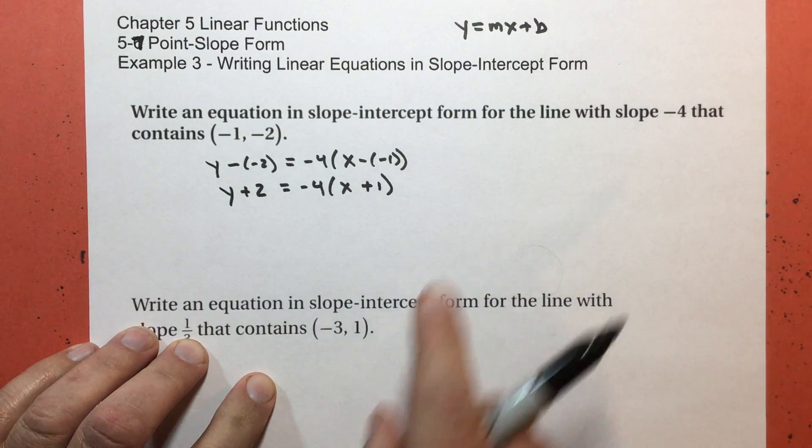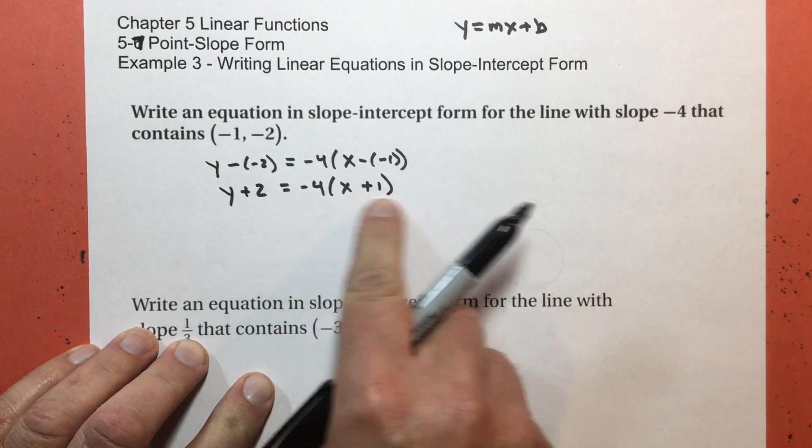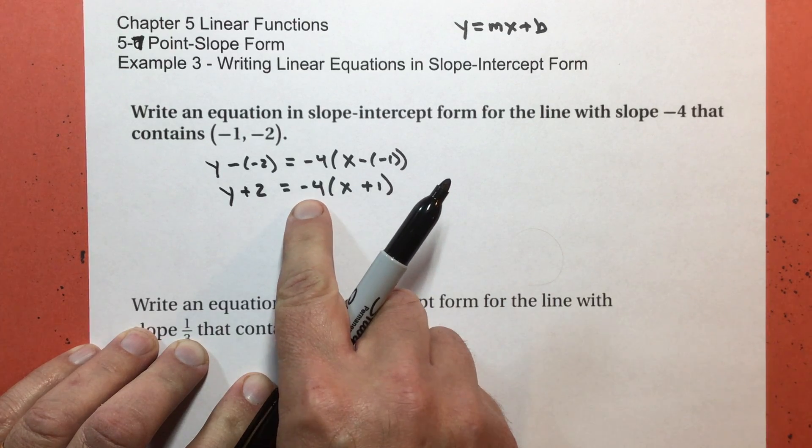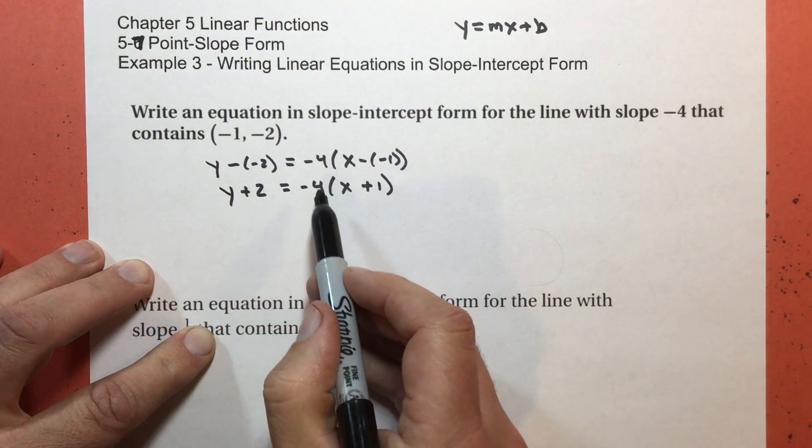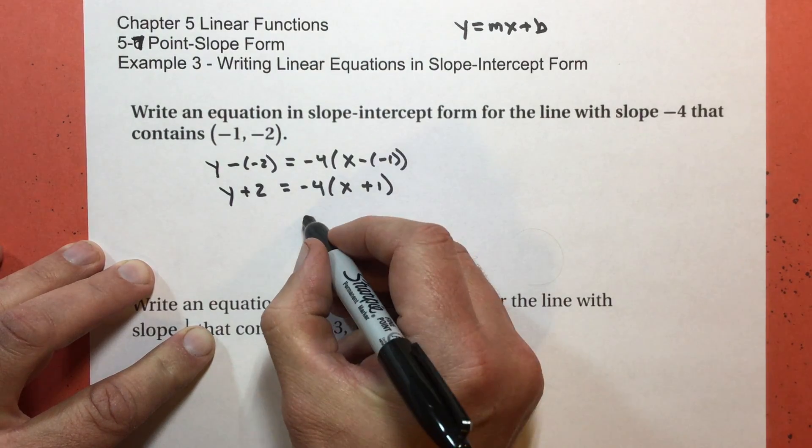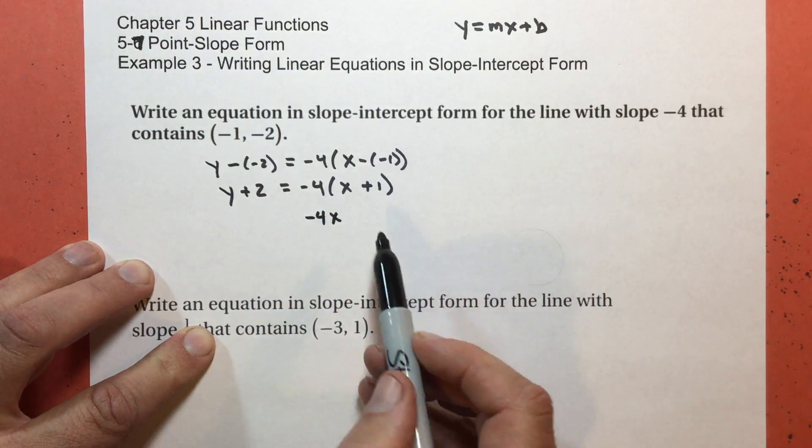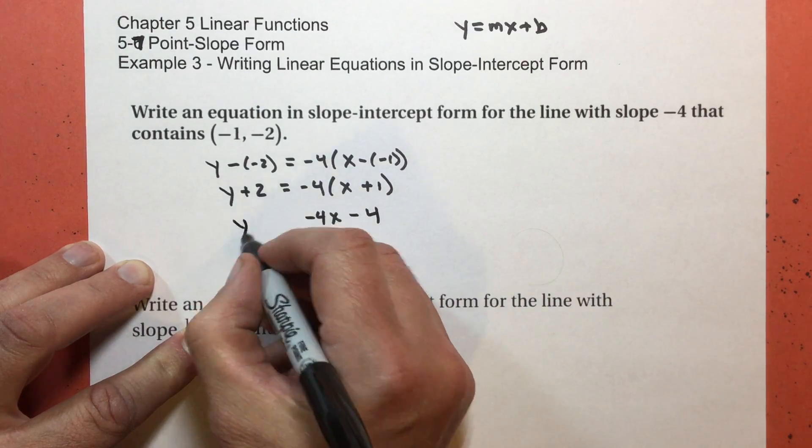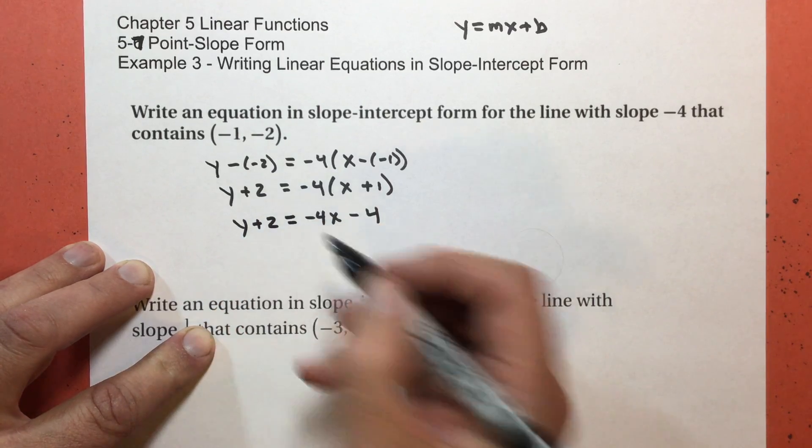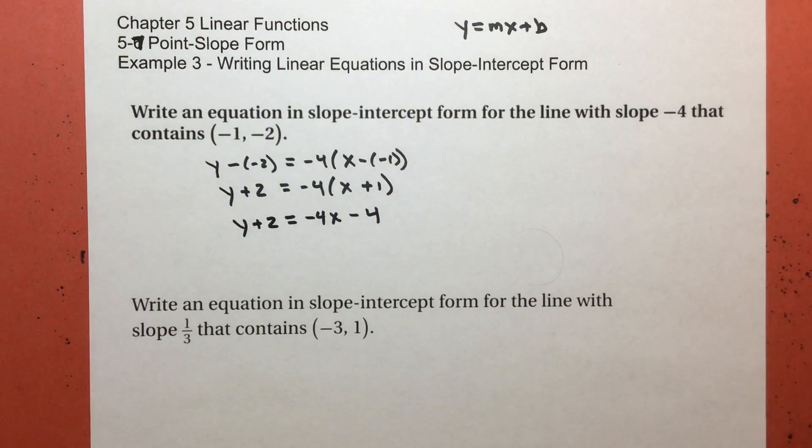To get it into slope intercept form, I need to get rid of my parentheses here. In other words, I need to multiply negative 4 times both of these. That is called distribution. I'm going to multiply the negative 4 times the x, and I'm going to multiply the negative 4 times the positive 1, which is negative 4. The y plus 2 has not done anything yet.